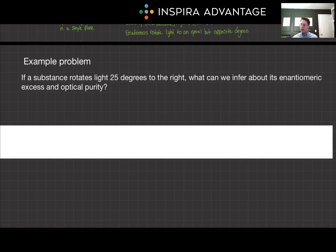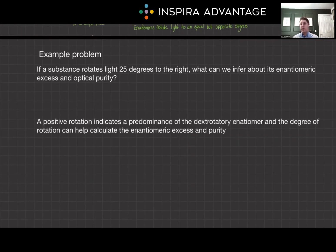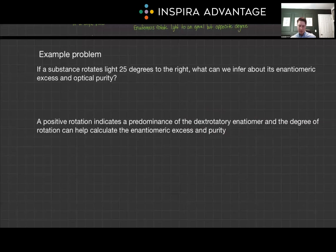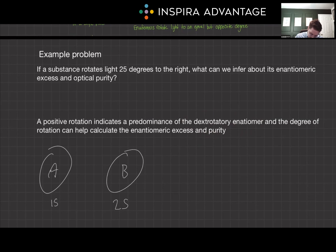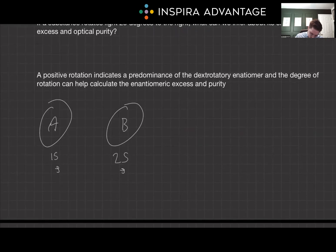Let's end today with an example problem. If a substance rotates plane-polarized light 25 degrees to the right, what can we infer about its enantiomeric excess and optical purity? Take a few moments and try to figure this out on your own. The prominence of the dextrorotatory enantiomer — the plus, or right-shift — and the degree of rotation can help calculate enantiomeric excess and purity. We can say with certainty it is a plus, or R-enantiomer. We would need more data to determine exact purity, but if we compare two samples — say sample A rotated 15 degrees and sample B rotated 25 degrees to the right — this tells us that sample B is more pure than sample A.